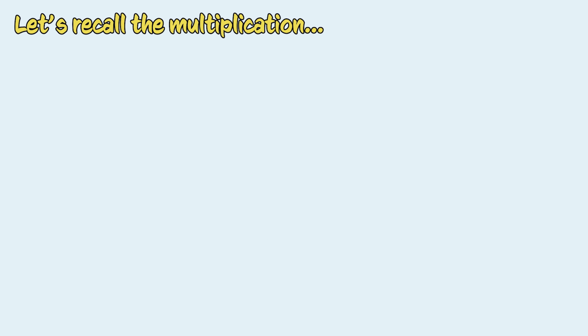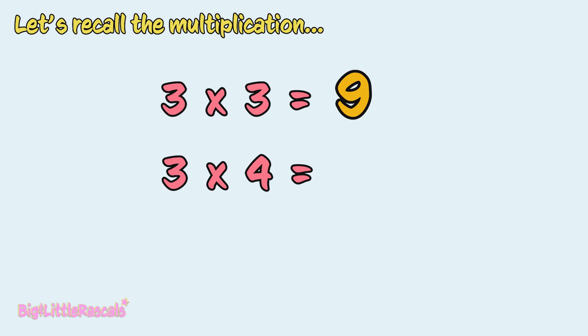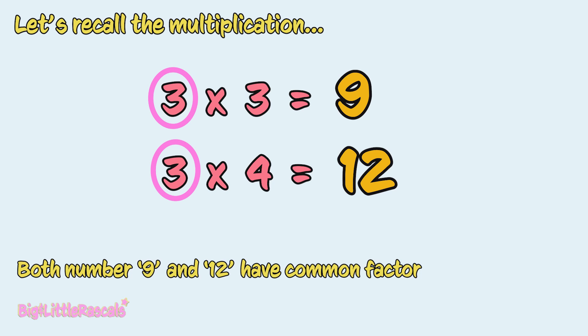Let's recall our memory about multiplication. We know that 3 times 3 equals to 9, and 3 times 4 equals to 12. From the above multiplication, we see that number 9 and 12 both have the same common factor, number 3. So they both are actually dividable by 3.